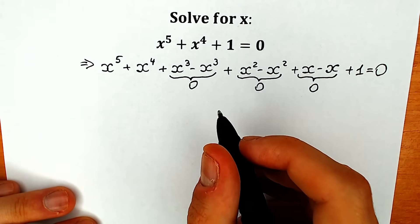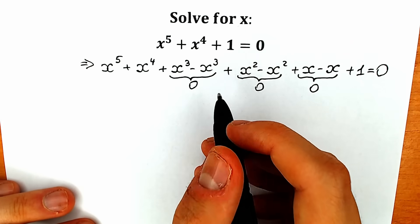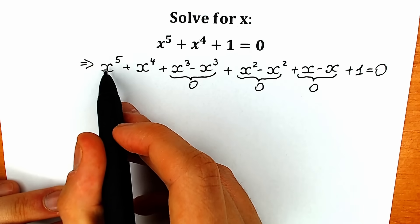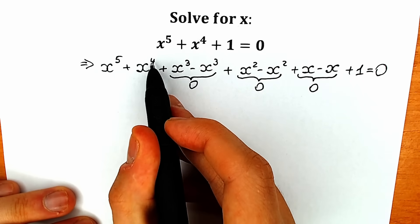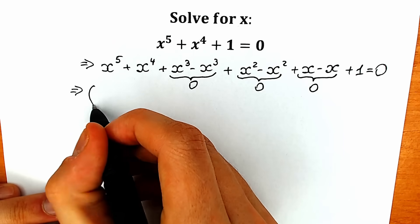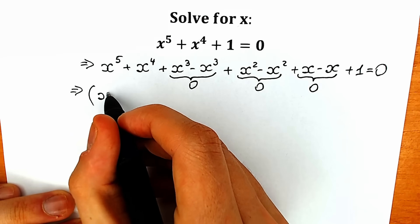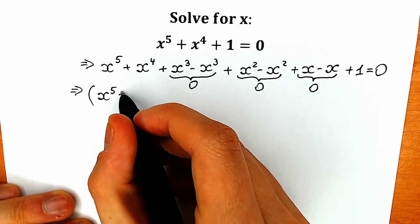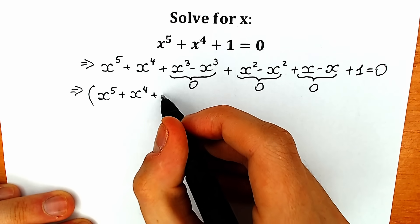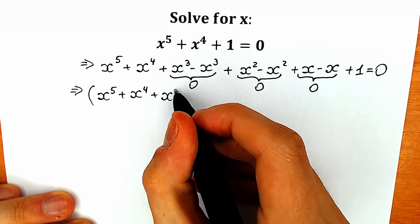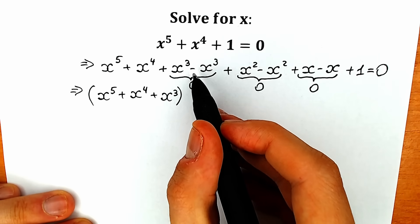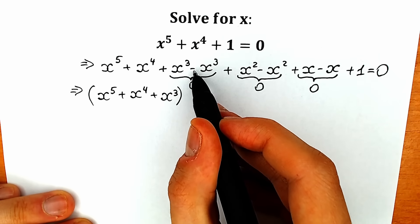Right now let's try to group our expression. First of all let's group x to the fifth, x to the fourth, and plus x cube — let's take them inside parentheses. So as a result we have x to the fifth plus x to the fourth plus x cube. Now let's write minus x cube in a second parenthesis.